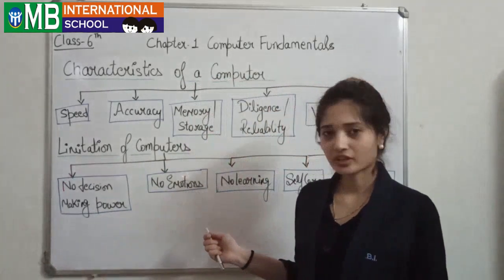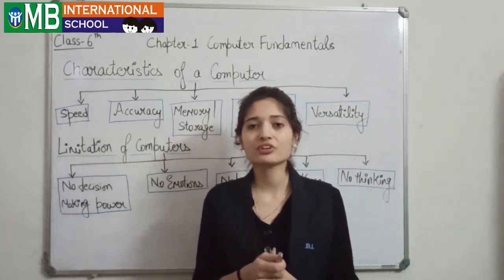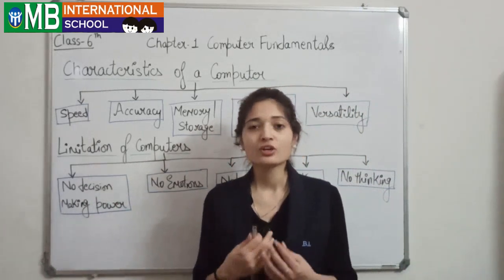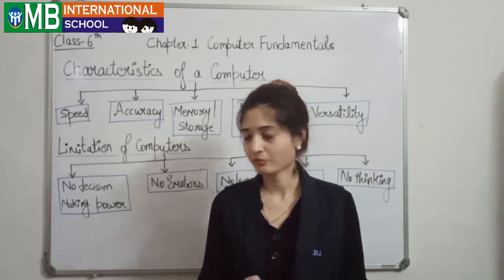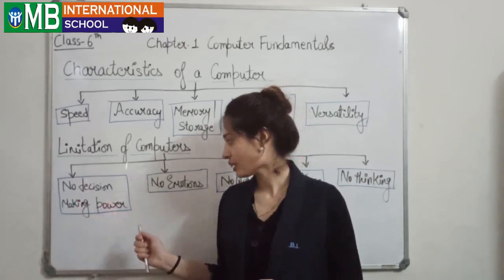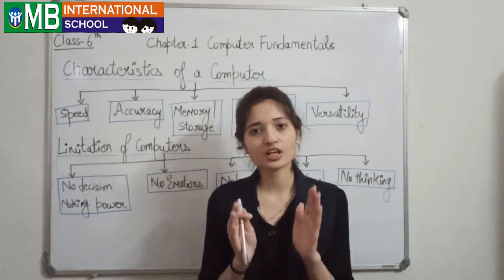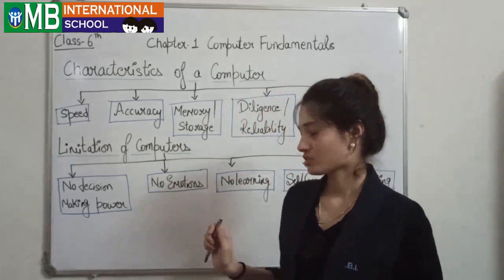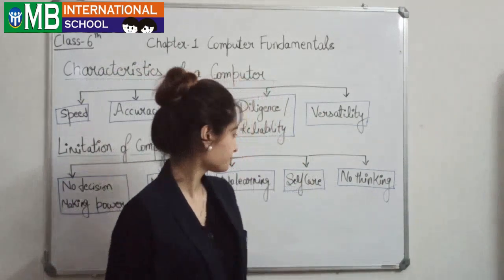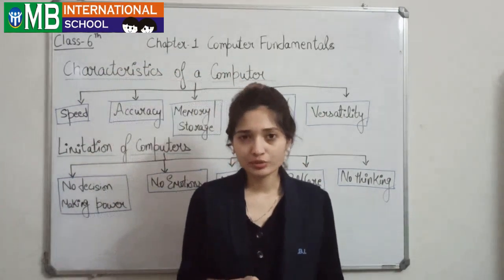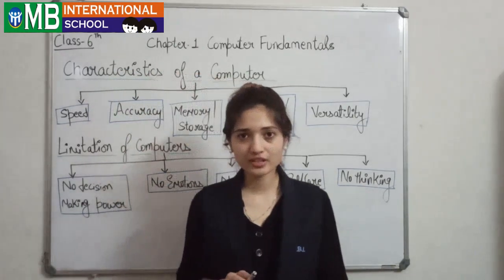Now, limitations of a computer. First, no decision-making power — a computer cannot decide anything on its own. It can only work on the instructions given by the user. The user decides which instructions to send, and the computer follows only those instructions. Next, no emotion — a computer has no emotions, no feelings. Then, no learning — a computer has no learning power. Self-care — a computer cannot take care of itself like a human being. And no thinking — a computer has no thinking power.